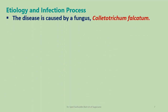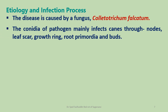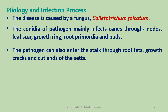The disease is caused by an imperfect fungus, Colletotrichum falcatum. The conidia of the pathogen mainly infect canes through nodes. The main portals of entry are leaf scars, growth rings, root primordia, and buds. The pathogen can also enter the stalk through rootlets, growth cracks, and cut ends of the sets.